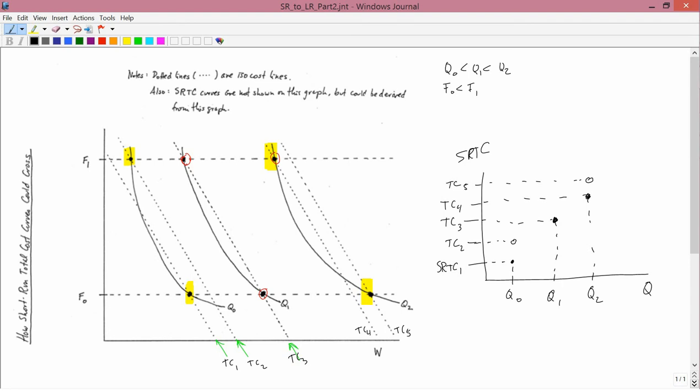Now, let's see what the individual fertilizer levels would have gotten. For F0, follow along the F0 line. Here, which is TC1, here, which is TC3, and here, which is TC5. Let me repeat, TC1, TC3, and TC5. That's F0.